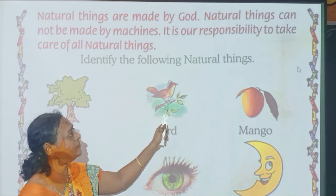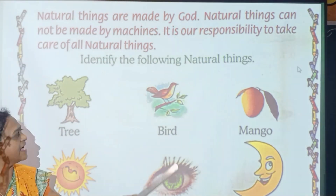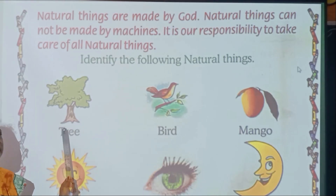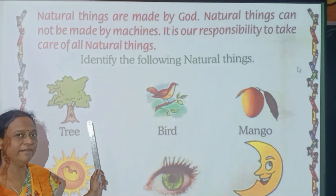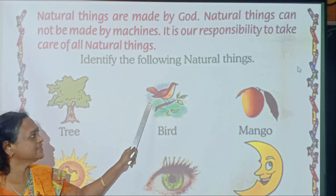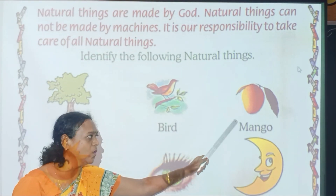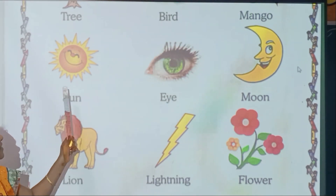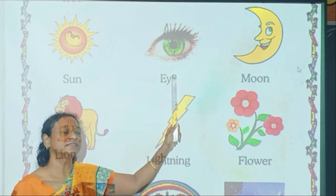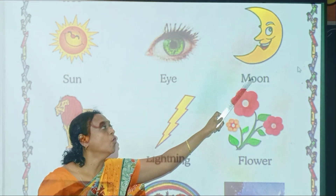Identify the following natural things. So here are pictures of natural things. What is this? Tree. What is this? Bird. Mango. Sun. What is this? Eye. And this is moon.